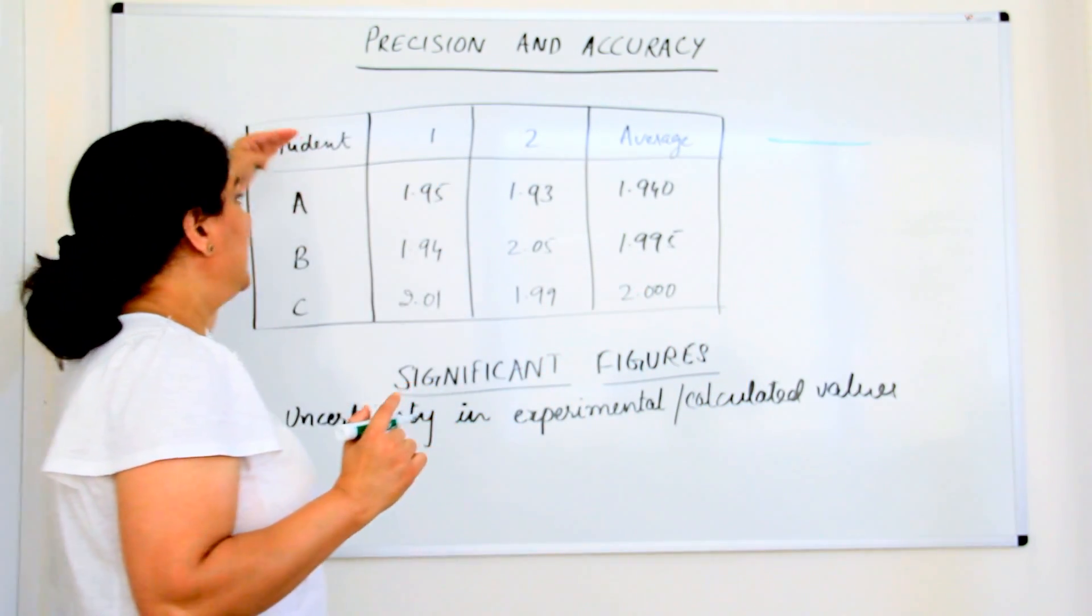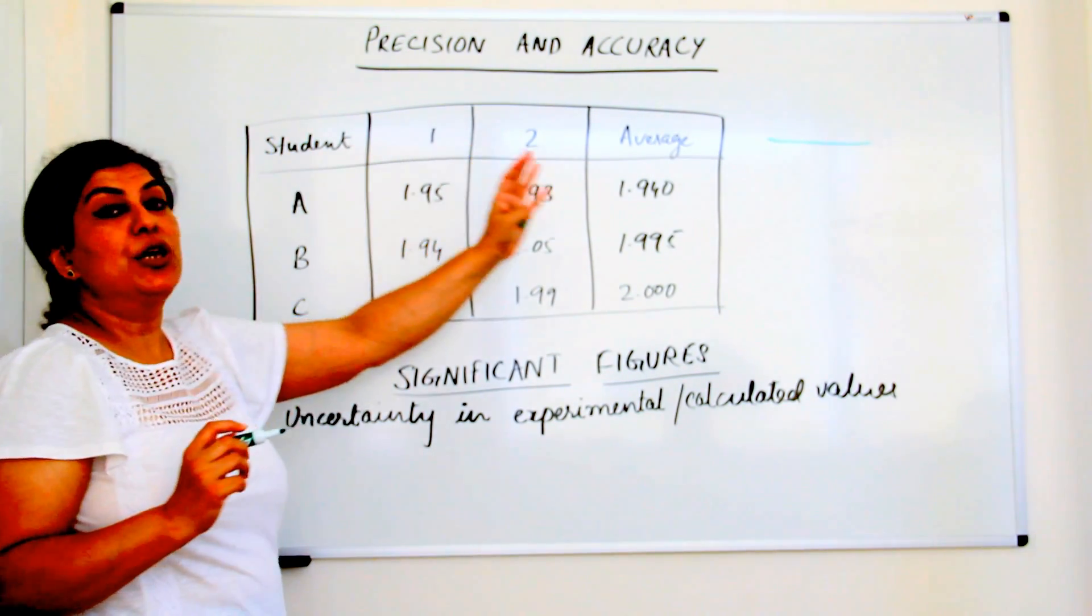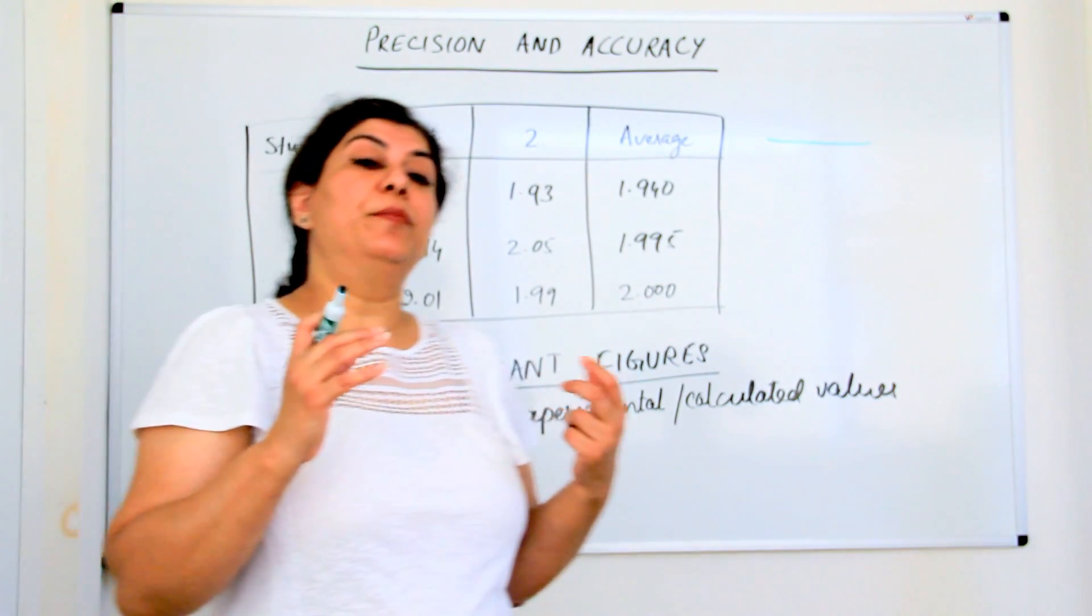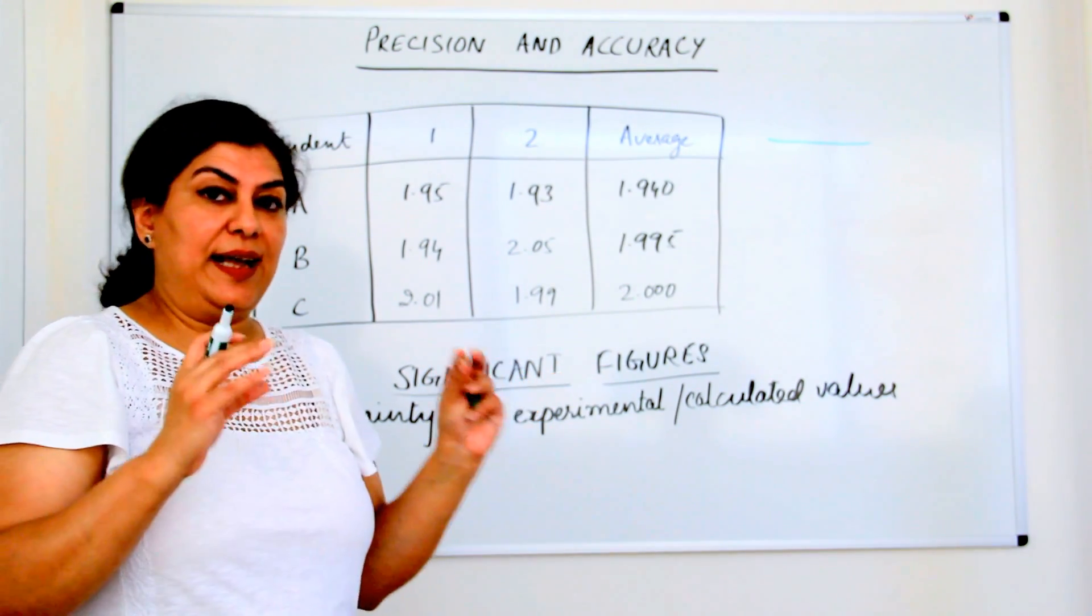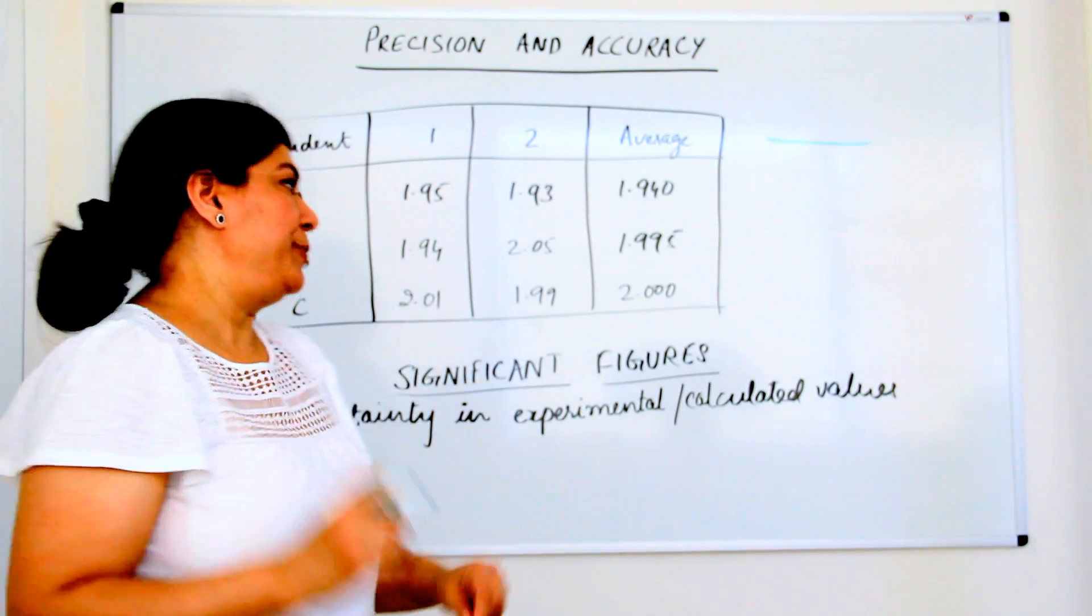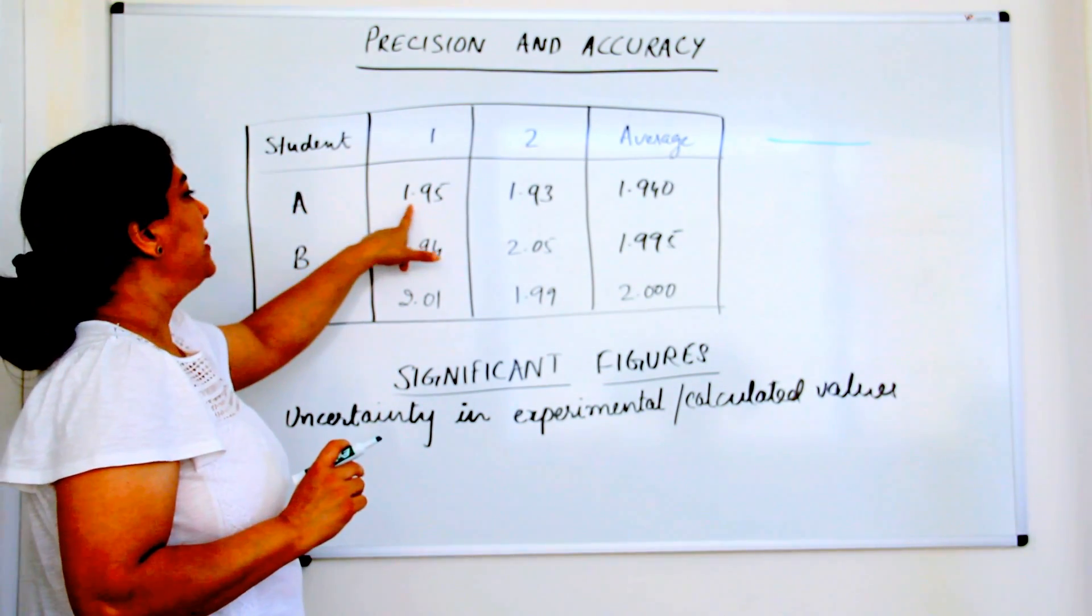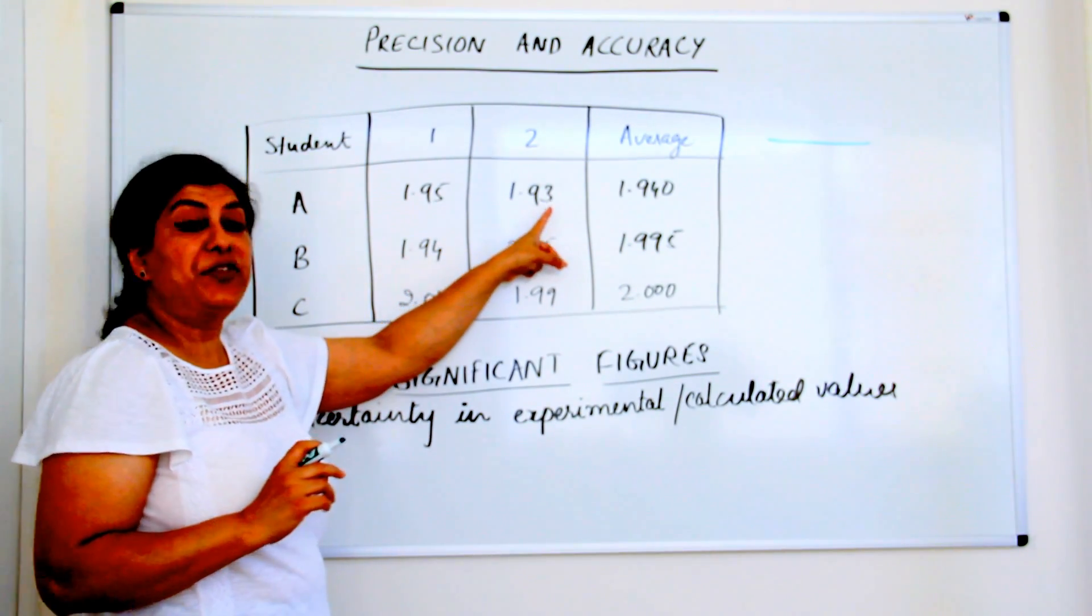So let me just come to this. These are examples of students, three students who carry out two measurements, and let us assume that the measurement that we want is 2 grams. 2.000 is accurate. That is the actual measurement. Student A, his first measurement is 1.95 and the second measurement is 1.93.